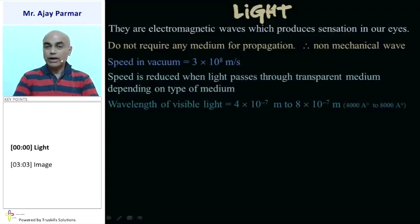Wavelength of visible light, that is VIBGYOR - violet, indigo, blue, green, yellow, orange and red color. The wavelength ranges from 4 into 10 raised to minus 7 meter to 8 into 10 raised to minus 7 meter. In terms of angstrom, we can write it down as 4000 angstrom to 8000 angstrom.